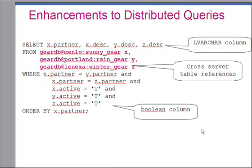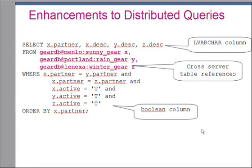Here's an example of a distributed query that uses an LVARCHAR column in its projection list and a Boolean column in its predicate list. Basically, you can use LVARCHAR, Boolean, or any distinct data types or any of the basic data types in your distributed query starting from IDS 11.